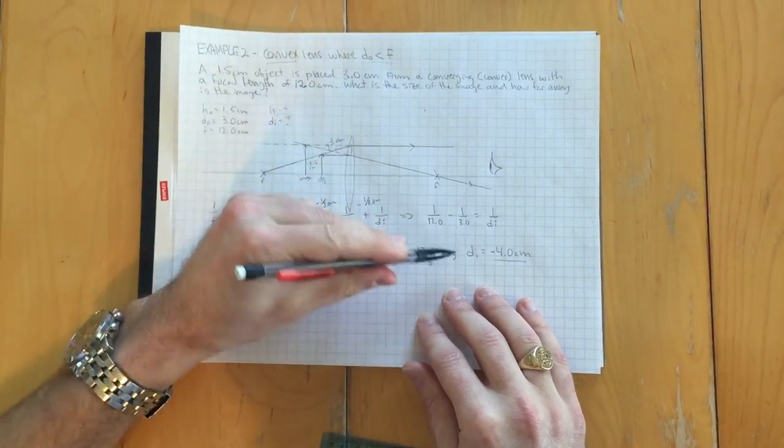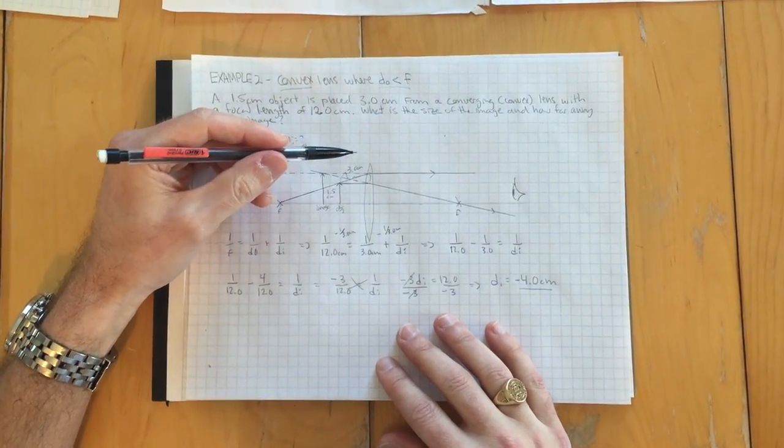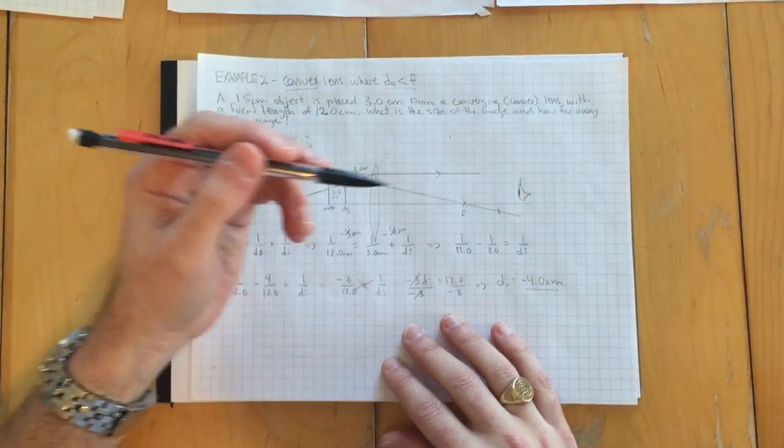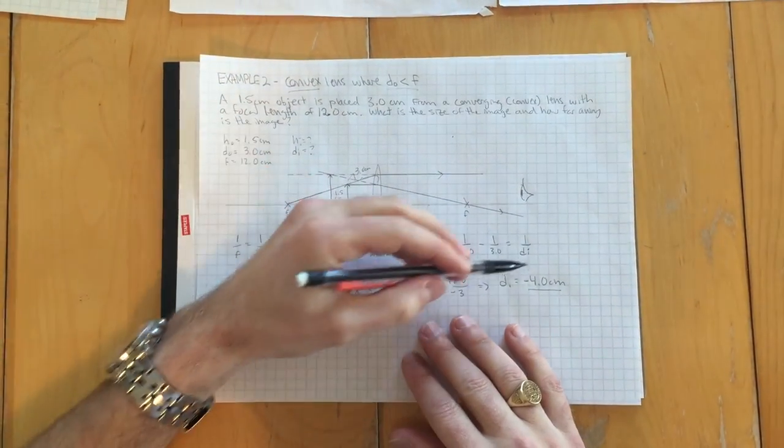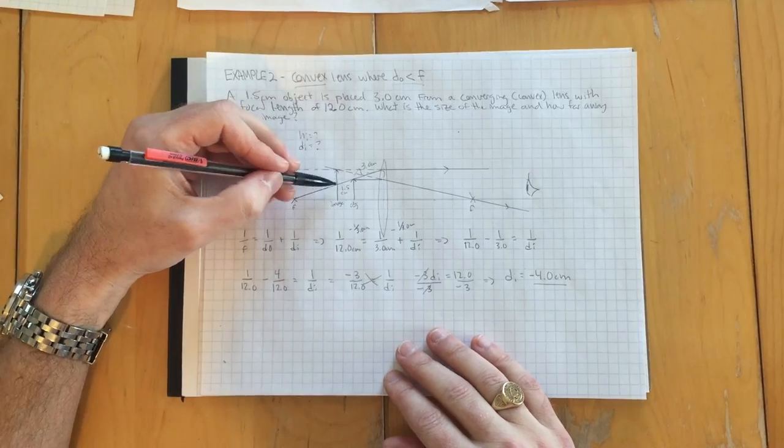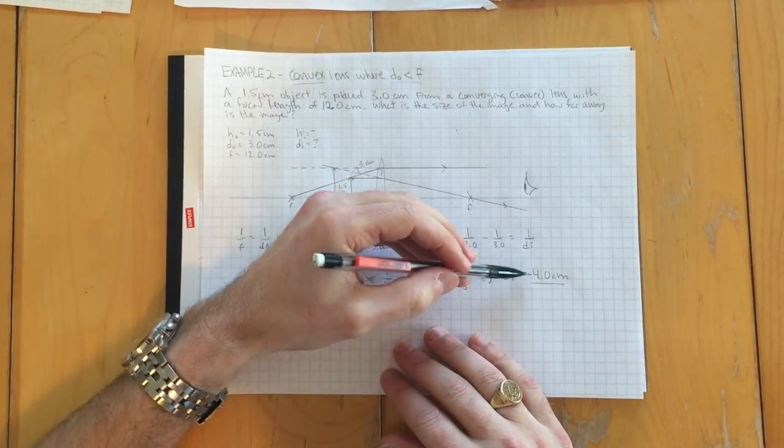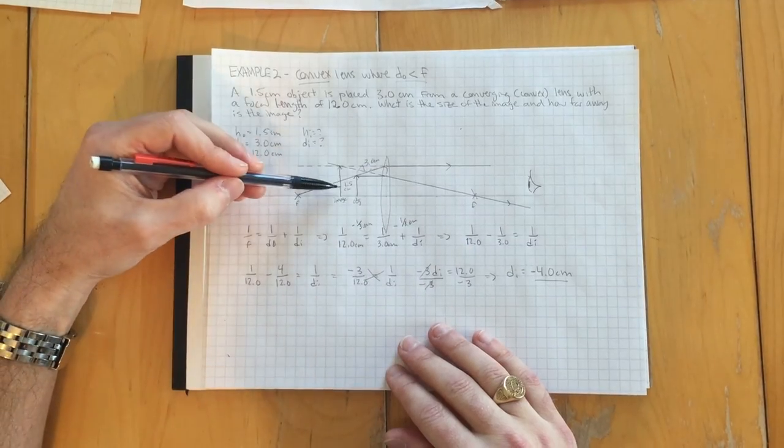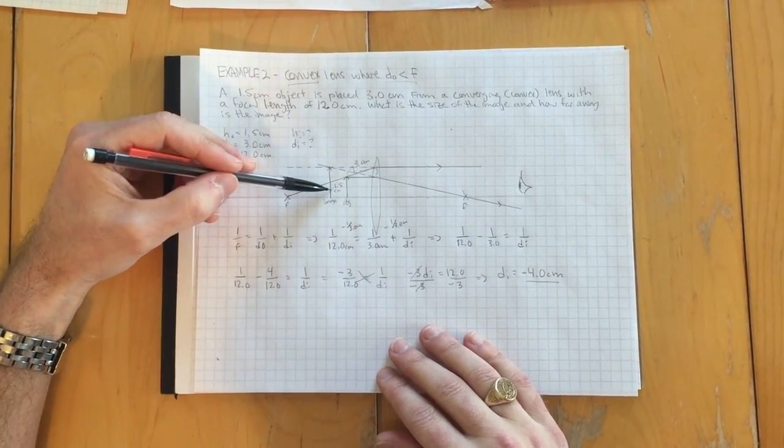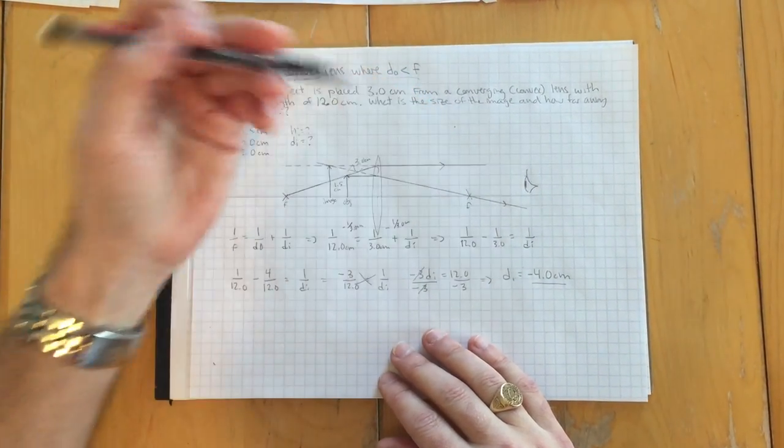So the minus tells us that the image appears on the same side of the lens as the object does. So that's difference from the first example. So go back and look at that. If you didn't catch that there was a positive number in the first one and the image appeared over here on this side. So that's what that minus sign means in this case. Sometimes we've talked about minus being opposite, you know, up and down and all that stuff. In this case, a minus distance image means it's on the same side of the lens or the opposite side as your eye in this case.